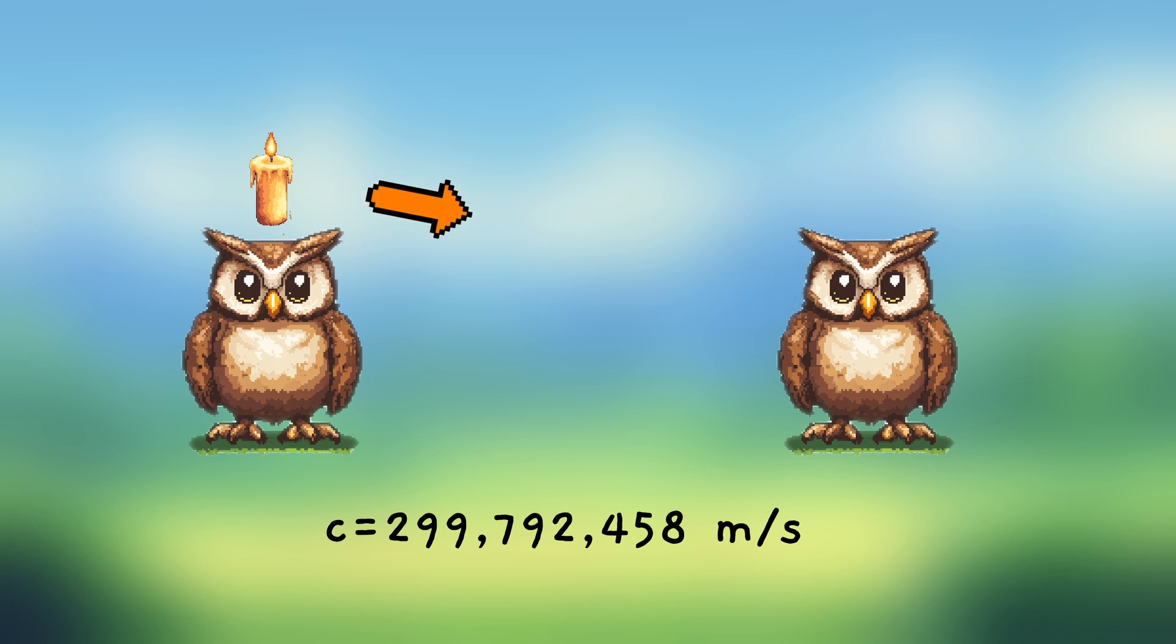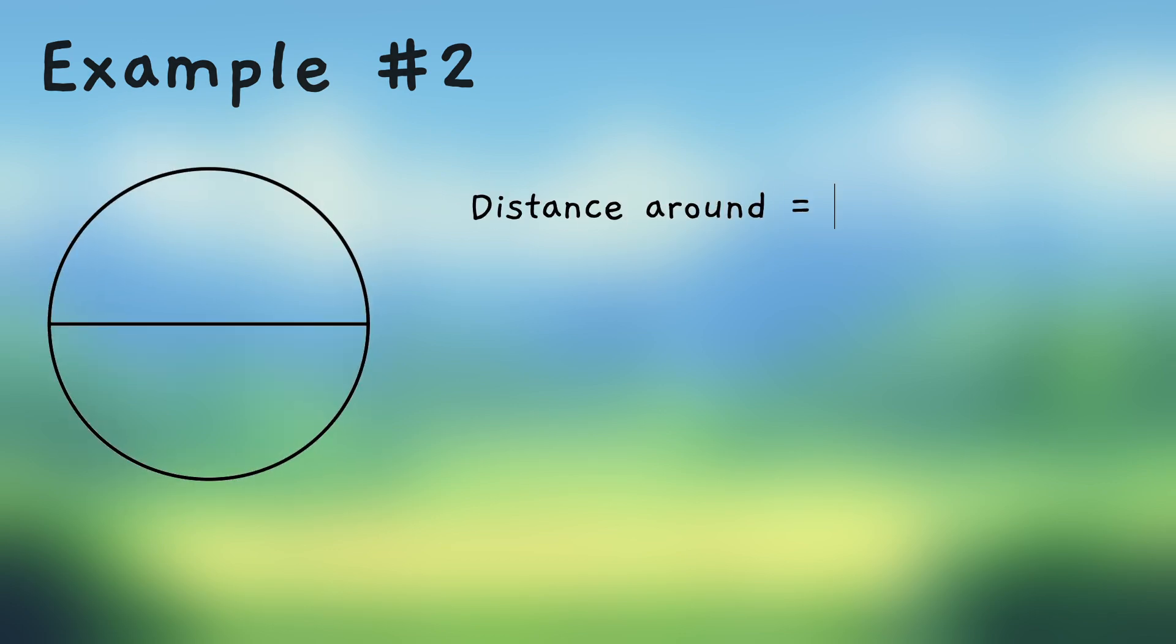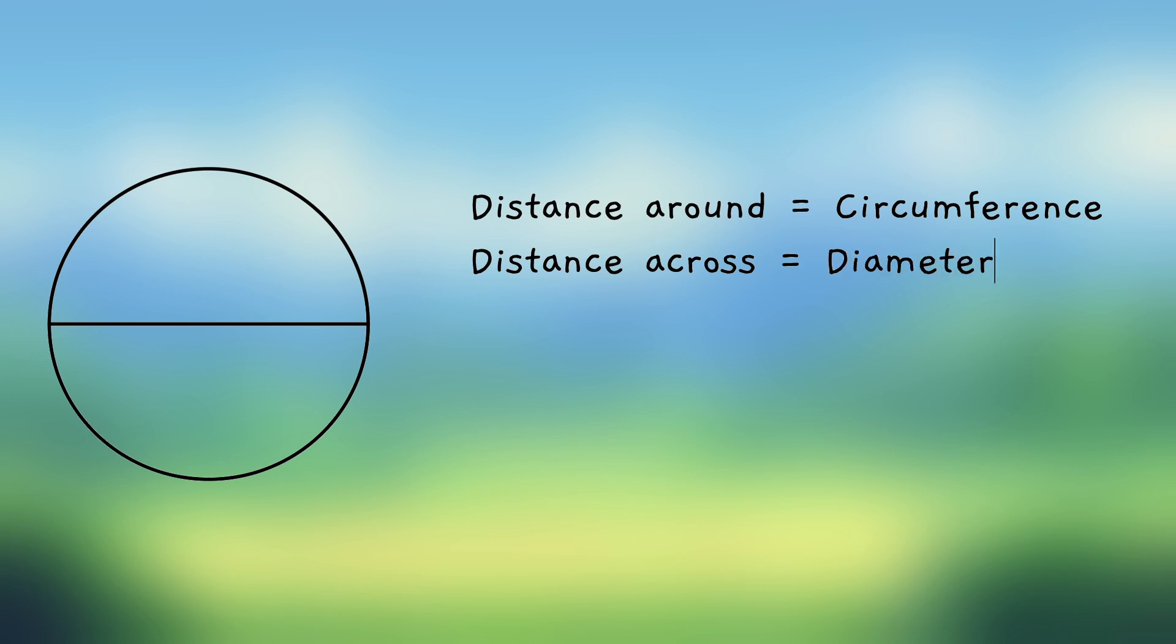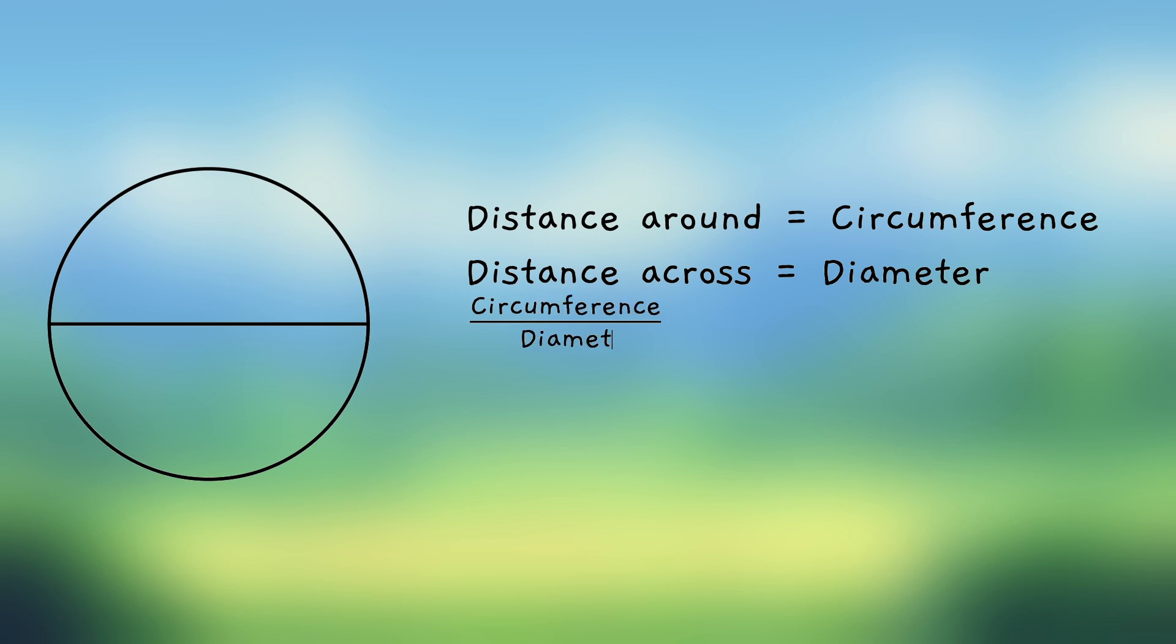Let's see another example in another way that letters are used in algebra. Suppose we have a circle. The distance around a circle is called the circumference. And the distance across the circle is called the diameter. Now for any circle, no matter how big or how small, if you take the circumference and divide it by the diameter, you always get the same number, 3.14159.